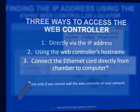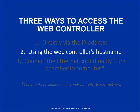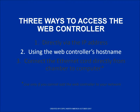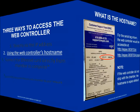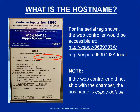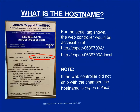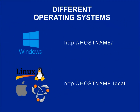The second method is to use the web controller's host name. The host name uses the chamber's serial number that is listed on the serial tag on the side of the chamber. If you purchase the web controller separately, use the ESPEC default address that is shown at the bottom of the screen. The host name format varies based on your operating system and will include a .local for some systems.